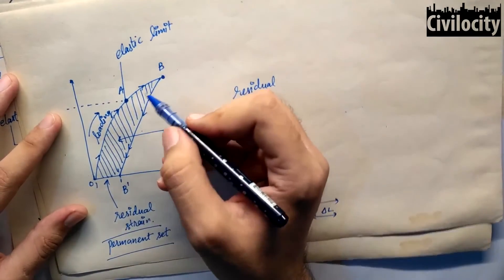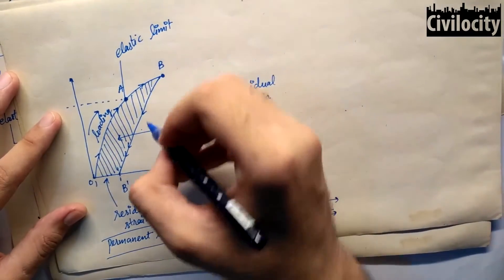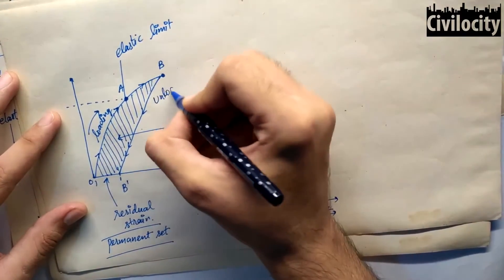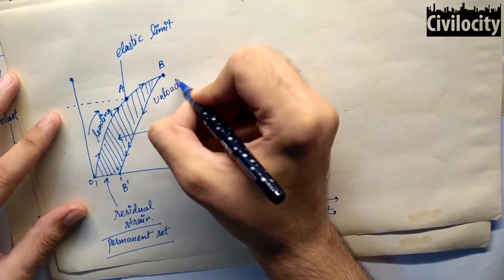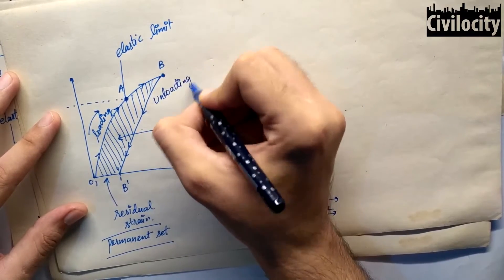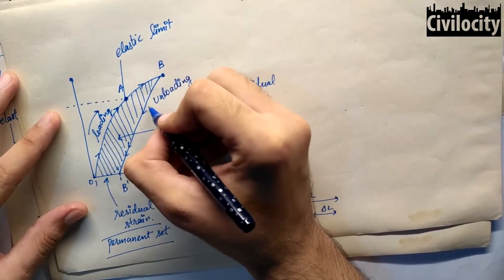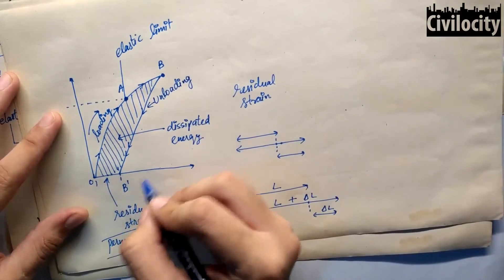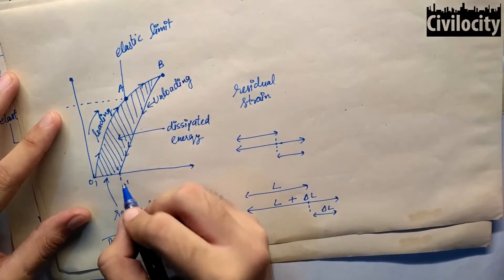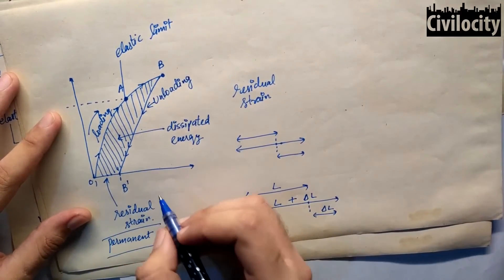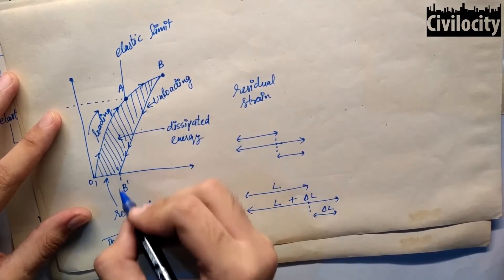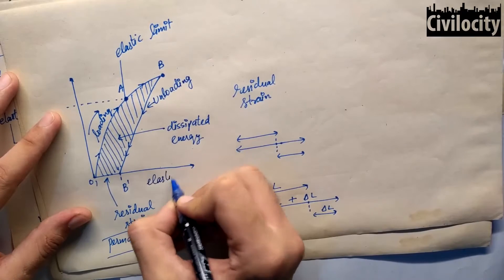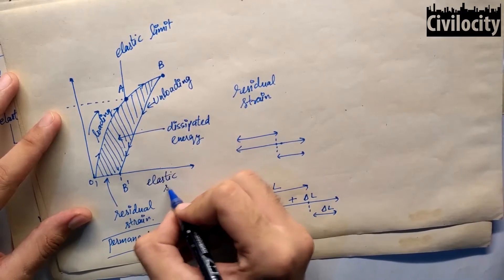A is our elastic limit, B is our applied load, and B-B' is our unloading curve. B-B' is our residual strain or permanent set, and the remaining recovery is our elastic set.